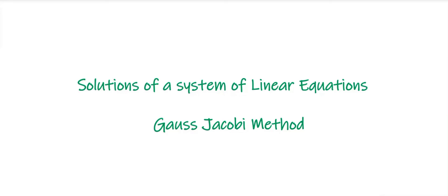We've seen solutions of a system of linear equations using two direct methods: Gauss elimination and Gauss Jordan. Now we'll see the iterative methods, which are the Gauss Jacobi method and Gauss Seidel method. In this video we'll focus on the Gauss Jacobi method — first the working rule, then examples.